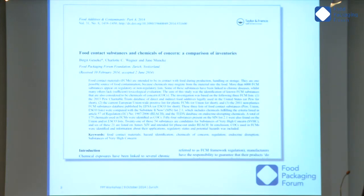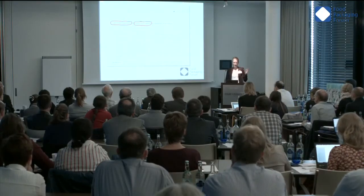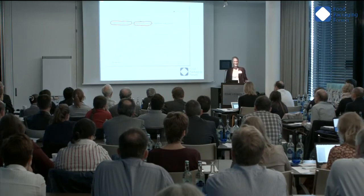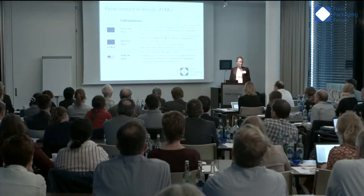Coming to the topic of my talk: this summer we published a scientific study on food contact substances and chemicals of concern. It appeared in July and we compared different inventories of food contact substances with known chemicals of concern — so chemicals that have hazardous properties. I will introduce the lists we have used, and that's something important to follow for the rest of the talk, so please pay attention to the next two slides.